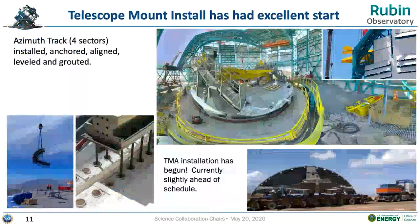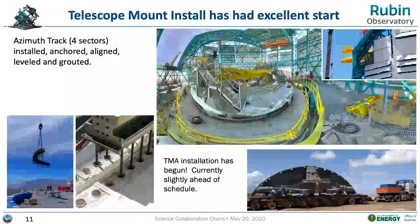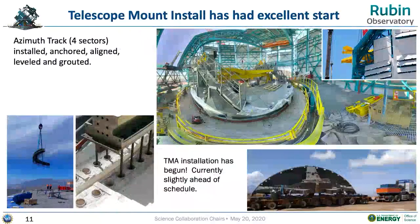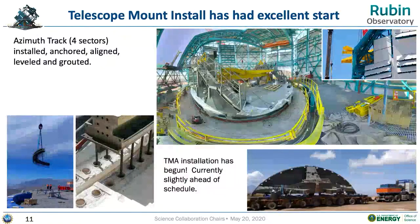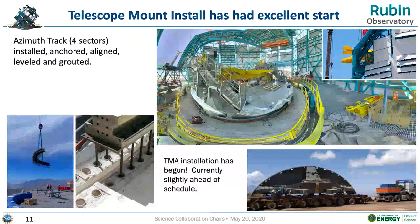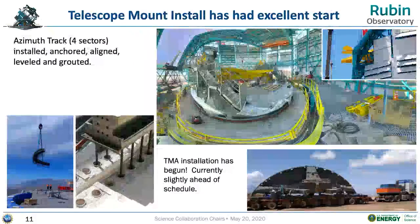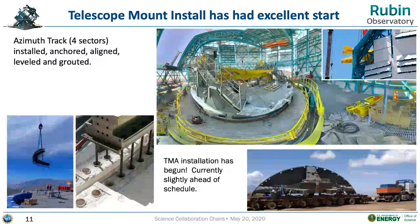At the same time we started work on the telescope mount assembly (TMA). This began with the installation of the azimuth tracks — which you see in the lower left — onto the top of the mount pier up on the summit site. The panoramic view in the upper right shows progress just prior to the shutdown.